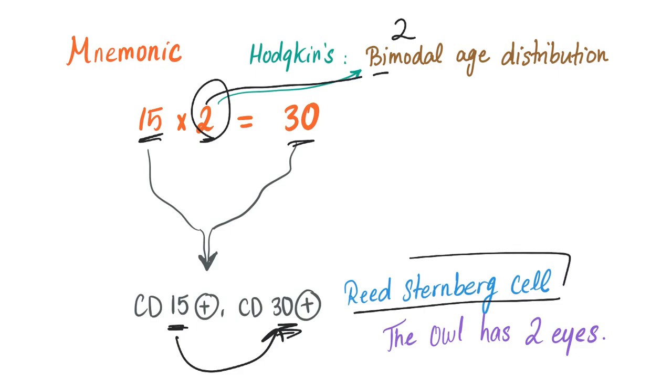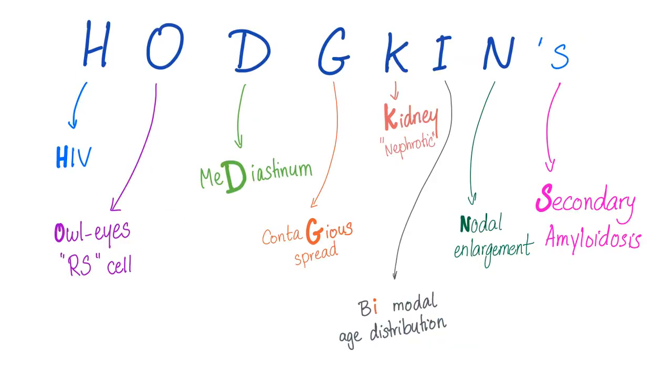The Reed-Sternberg cell is CD15 positive and CD30 positive. The Reed-Sternberg cell has the characteristic owl eye appearance and the owl has two eyes. So you have times 2 for bimodal distribution and for two eyes.